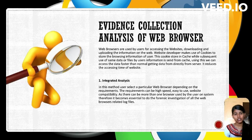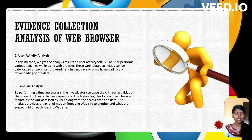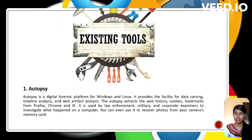Web browsers facilitate website access and data transfer. They use cookies to store user data, which is cached for quicker access. Integrated analysis involves choosing a browser based on speed, ease of use, and compatibility, and may require forensic analysis of multiple browsers' logs for comprehensive insight. User activity analysis examines the various actions a user performs in a web browser, like browsing sites and transferring data. Timeline analysis uses browser history logs to sequence a user's activities, identifying potential criminal actions.